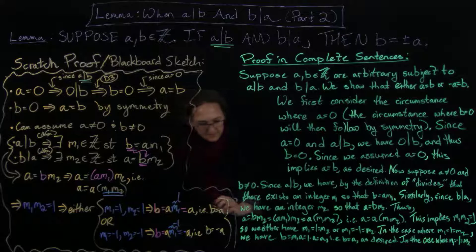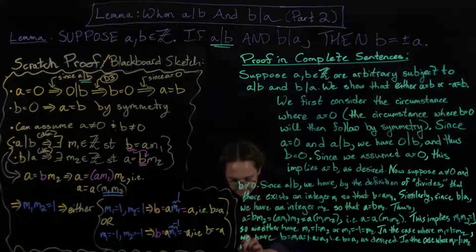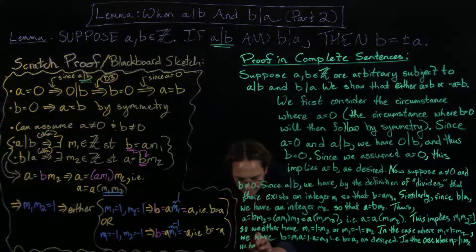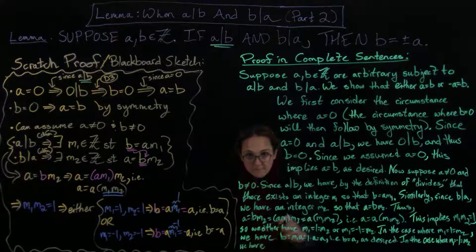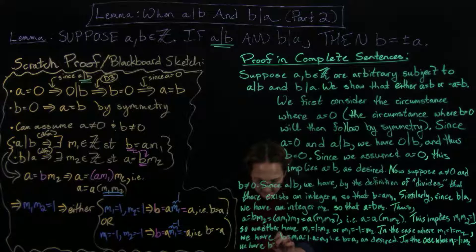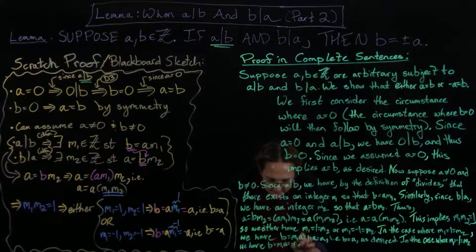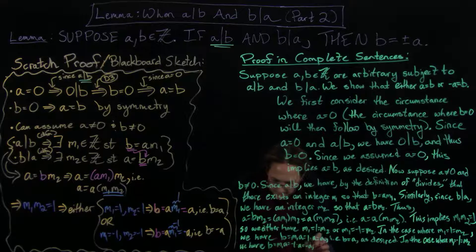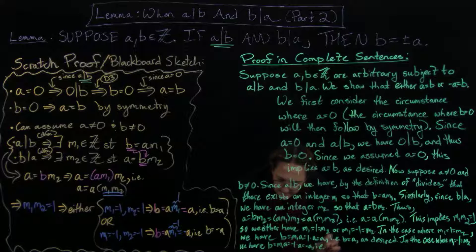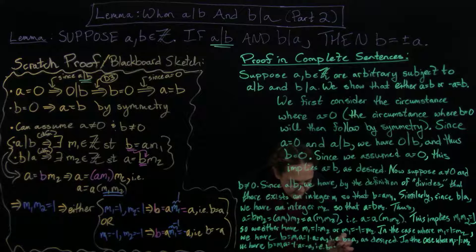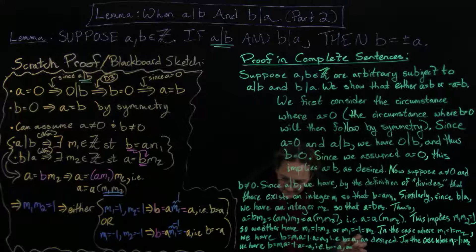We have that B is going to equal M1A equals minus 1 times A equals minus A, i.e. B equals minus A as desired.